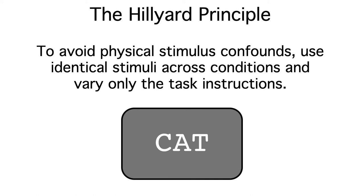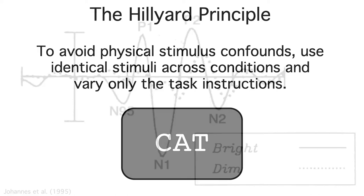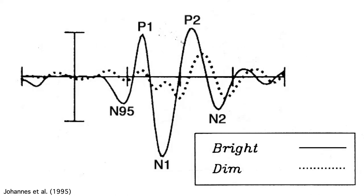When a study doesn't follow the Hilliard Principle, you should think carefully about whether the physical stimulus differences might be responsible for the results. The early ERP components are particularly sensitive to small physical stimulus differences, so be particularly concerned about effects within the first two or three hundred milliseconds.